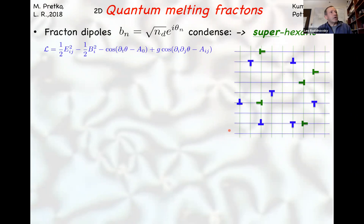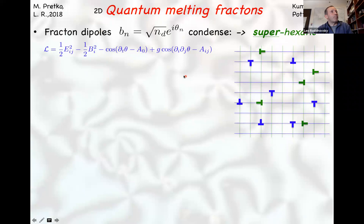Once you have these theories you can study not just the phases but phase transitions. One thing I have done together with Michael Pretko and student Tsai is study the melting of this theory — melting of a crystal by condensation of dipoles, which on the gauge theory side corresponds to a Higgs transition. If you condense both types of dipoles — the X and Y dislocations — you go to a hexatic phase.